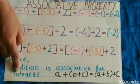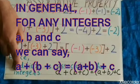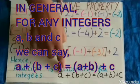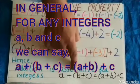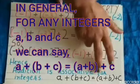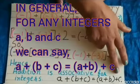If A, B and C are integers, in general, we can say A plus in bracket B plus C is equal to in bracket A plus B plus C.